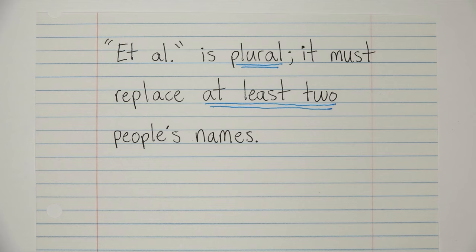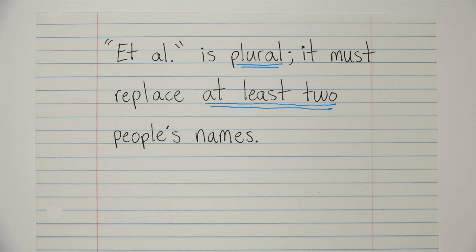One important thing to note though about et al. is that it's plural. So whenever you use it, you have to be replacing at least two people's names. So if you only have one person left in your list, don't use et al. Only use it when you're leaving off at least two people.